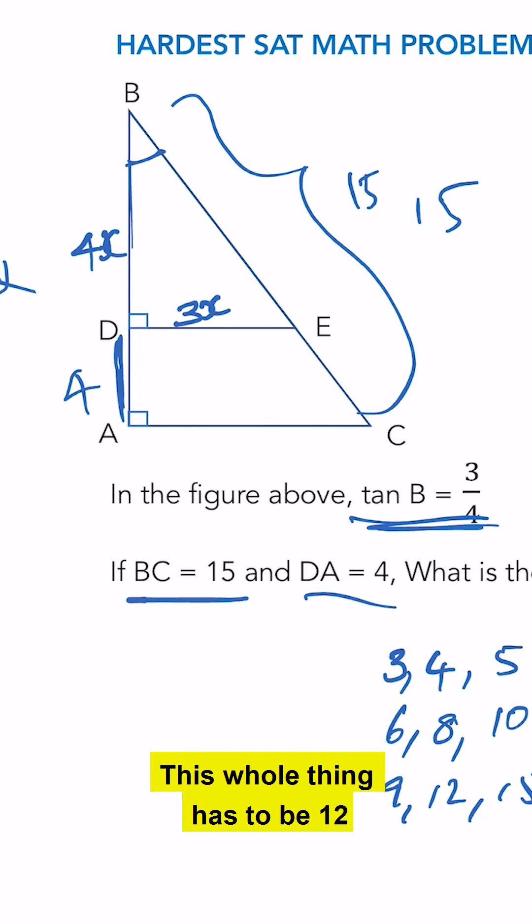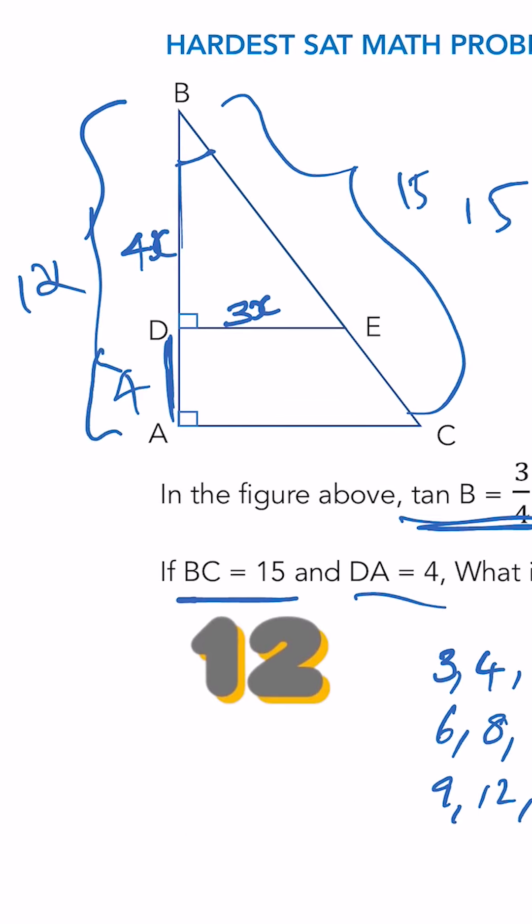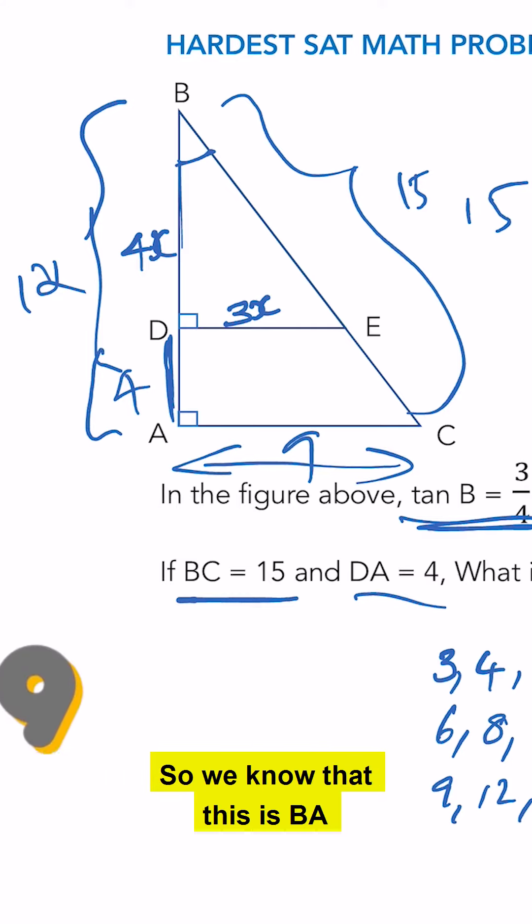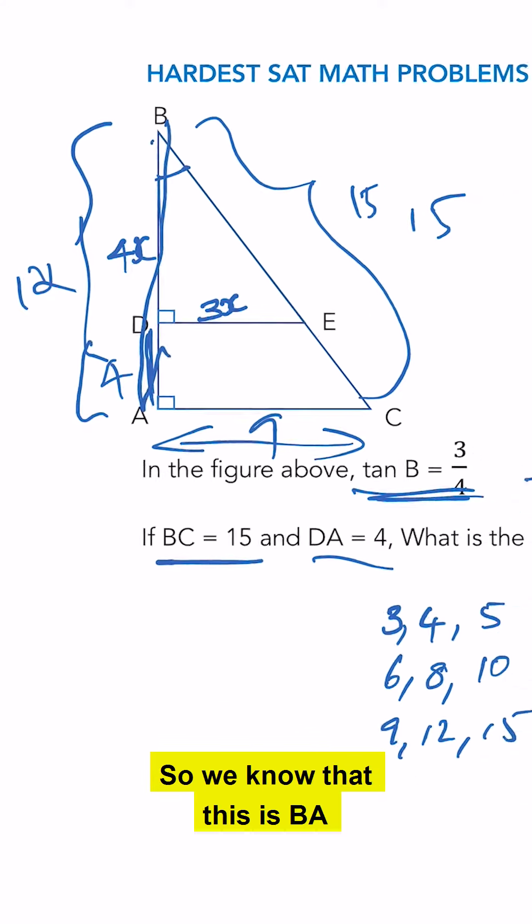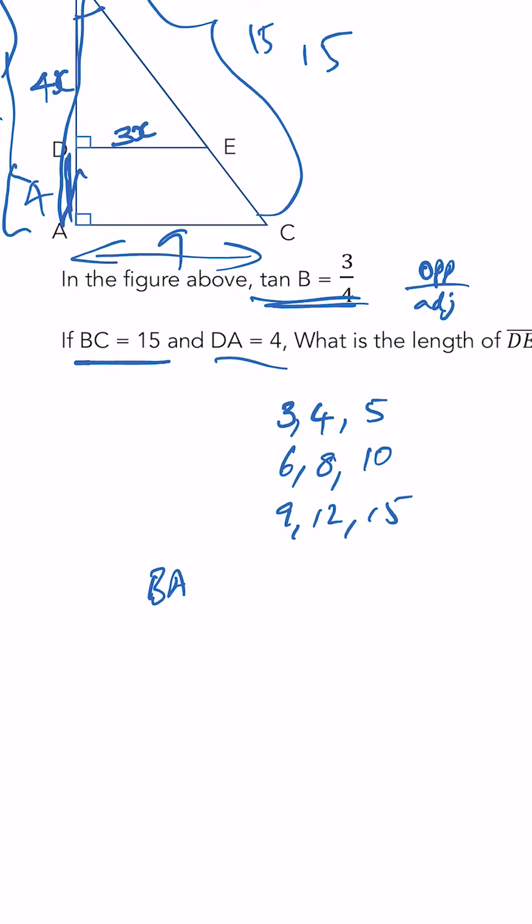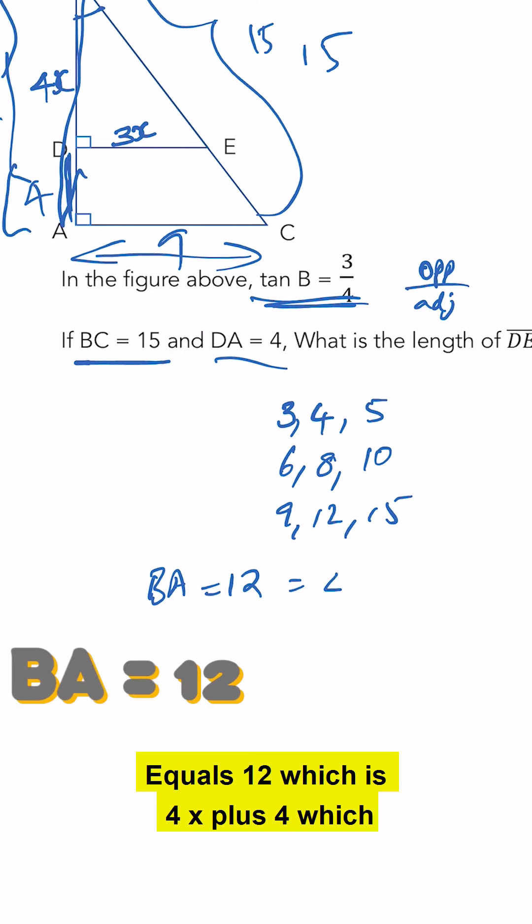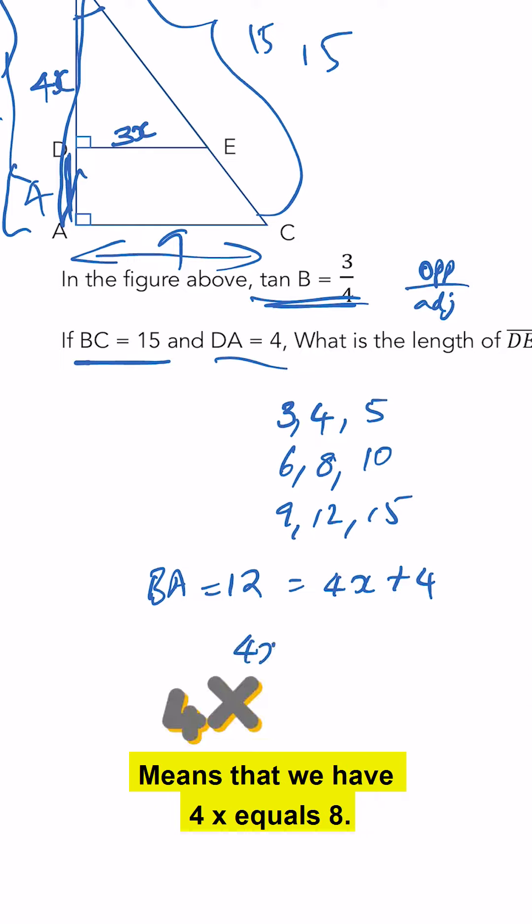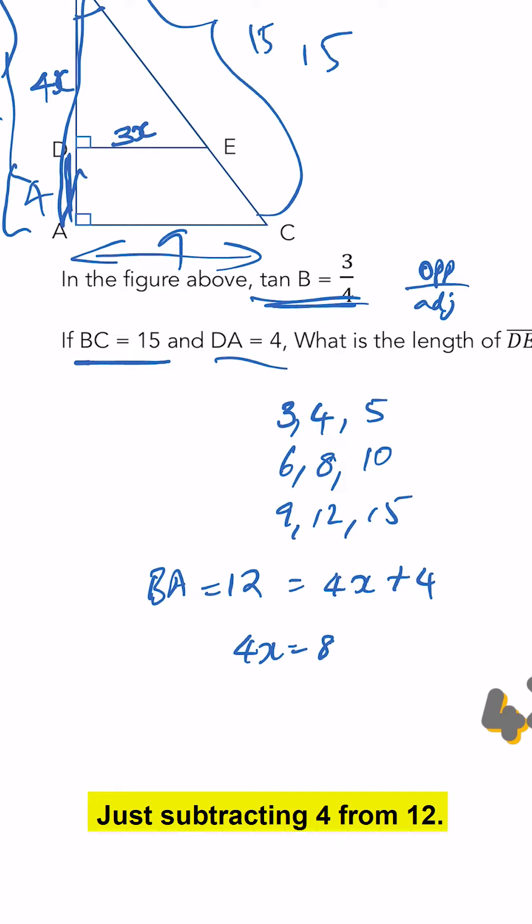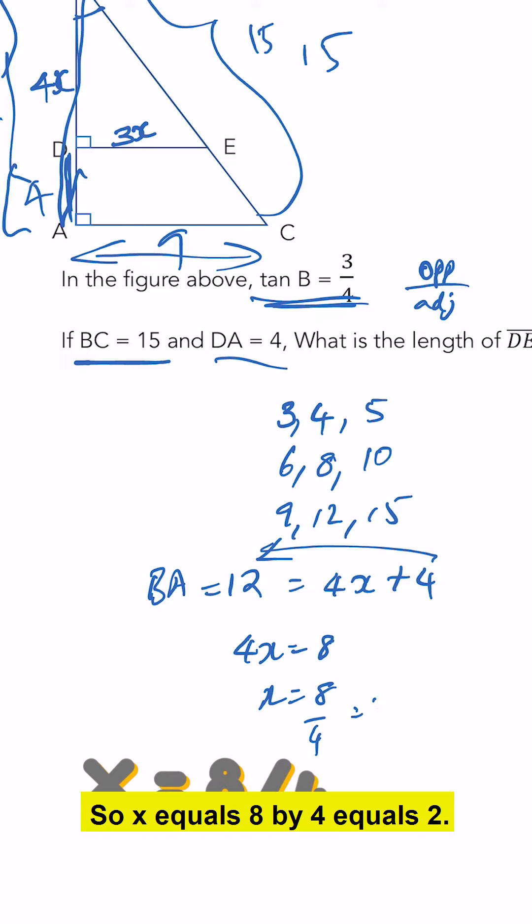This has got to be 12. This whole thing has to be 12. And this has to be 9. So we know that BA equals 12, which is 4x plus 4, which means that we have 4x equals 8, just subtracting 4 from 12. So x equals 8 by 4 equals 2.